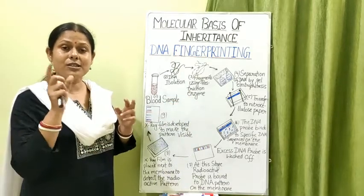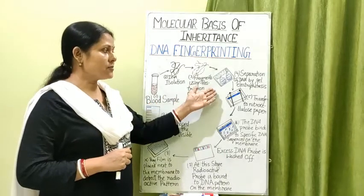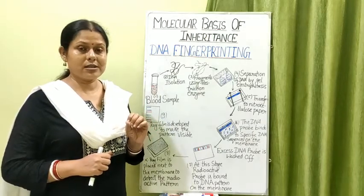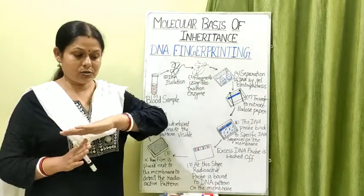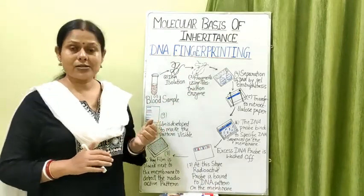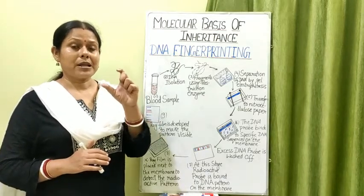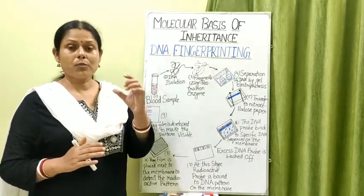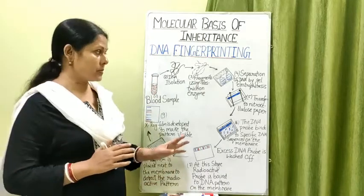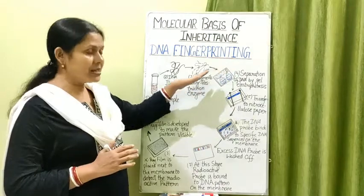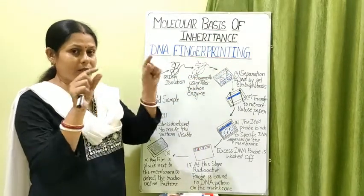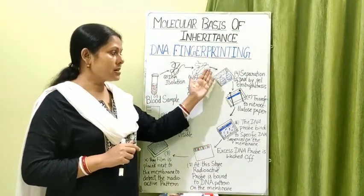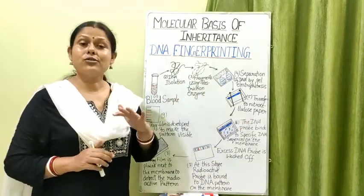After DNA isolation, the DNA is further treated with restriction enzymes, which cut the DNA into smaller fragments. These fragments are then separated by a process called gel electrophoresis. A glass plate coated with agarose gel is used, and electricity is run through it. Depending on size, the smaller fragments migrate first, followed by heavier ones at the bottom — separating the DNA fragments by size.